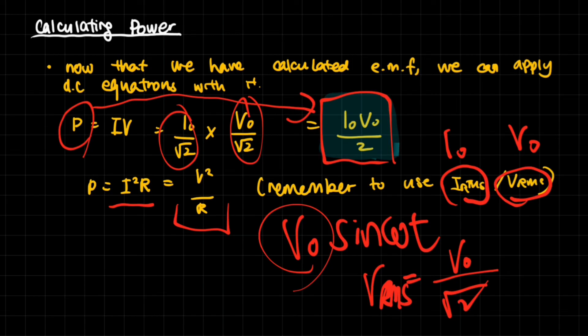That covers this chapter on alternating currents. Coming up next are the derivation of the root mean square, rectification, and transformers. Stay updated for those videos — thank you for watching.